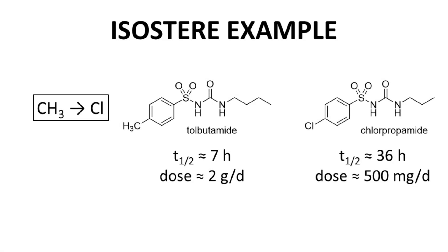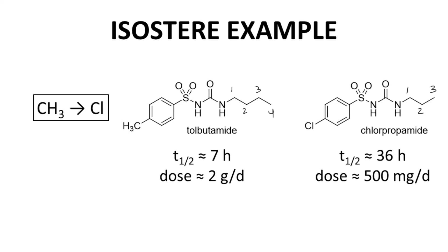Here is an example of a classical isosteric replacement. On the left is Tolbutamide, a diabetes drug with a half-life of 7 hours and a possible daily dose of up to 2 grams per day. Its main route of metabolism is oxidation of the methyl group. Tolbutamide was dramatically improved by replacing the methyl with a chloro group — a classical isosteric replacement. The chlorine resists oxidative metabolism, extending the half-life to 36 hours. With the lower clearance, the daily dose can be reduced to 500 mg per day, and a lower daily dose generally correlates with increased safety. The isosteric replacement of the methyl for a chloro is the main driver for the half-life change.